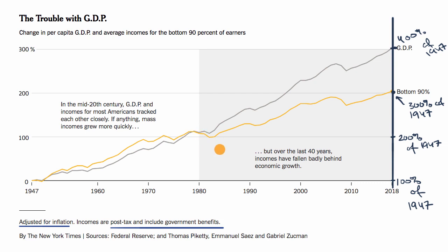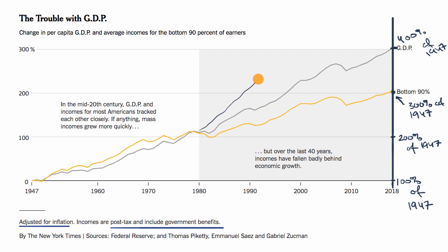Now something interesting that this graph highlights: over the next 40-year period from 1980 to roughly today, per capita GDP has continued to trend upward at a seemingly similar rate, but the average income for the bottom 90% does not seem to keep pace with that. We saw this trend in other videos looking at 1980 to now, but didn't have the historical 1947–1980 data showing this isn't always the case. For this to happen, the top 10% must be growing at a faster rate.